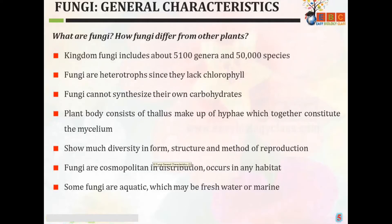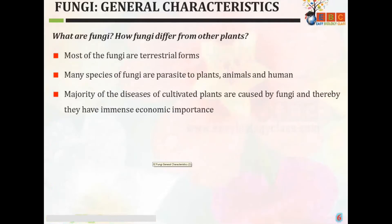Some fungi are aquatic, found in freshwater or marine water. Most fungi are terrestrial and can be found on land surfaces. Many species of fungi are parasites to plants, dependent on plants, humans, and animals. The majority of cultivated plant diseases are caused by fungi, and thereby they have immense economic importance.